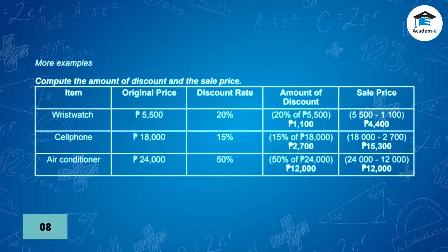More examples — compute the amount of discount and the sale price. Item: wristwatch, original price 5,500 pesos, discount rate 20%. Amount of discount: 20% of 5,500 pesos = 1,100 pesos. Sale price: 5,500 pesos minus 1,100 pesos = 4,400 pesos.